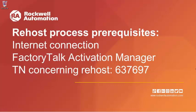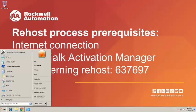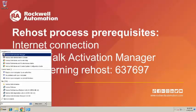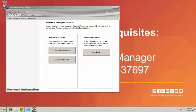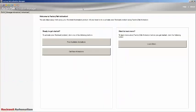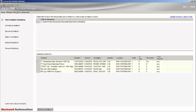From the Windows Start menu, type Factory Talk Activation into the Search Programs and Files field. You will see Factory Talk Activation Manager listed under Programs. Click on the program to open. Regardless of which version of the Activation Manager, you will see similar options. You will need to select Manage Activations and then Re-host Activations.